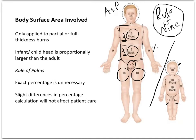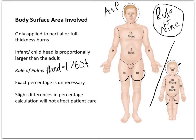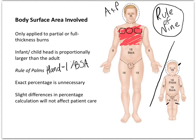The rule of palms means your hand is literally equal to 1% of BSA. So if this mannequin has been burned in the chest, your hand would go here — counting: 1, 2, 3, 4, 5, 6, 7, 8. It doesn't have to be exact. So that'd be approximately 8% body surface area involved.